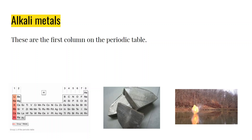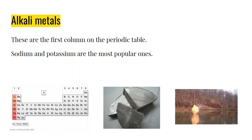Looking at the periodic table, you can see there's column one, then two, then it skips and goes to three, four, five, six, seven, eight — and then it actually has zero. We'll talk about why that is later. Sodium, otherwise known by its symbol Na, and potassium, also known by its symbol K, are the most popular alkali metals — the ones you see the most.